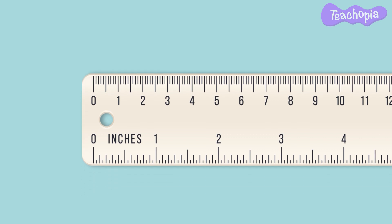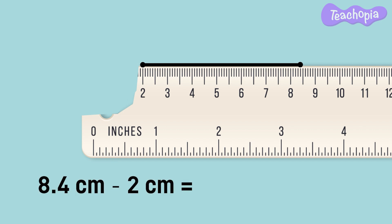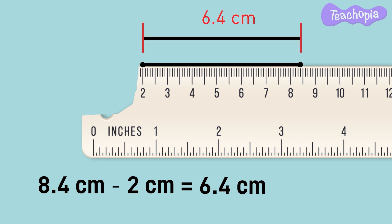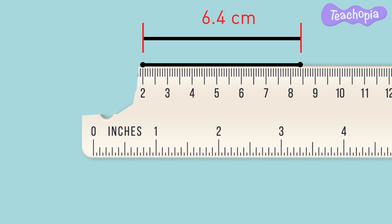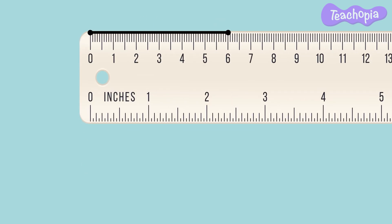If a scale is damaged or doesn't have zero marking, we can start from any other marking. Here we are drawing a line from 2cm to 8.4cm. If we subtract 2cm from 8.4cm we get 6.4cm. Hence the line we have drawn is 6.4cm. Using a scale we are able to draw lines of various lengths.